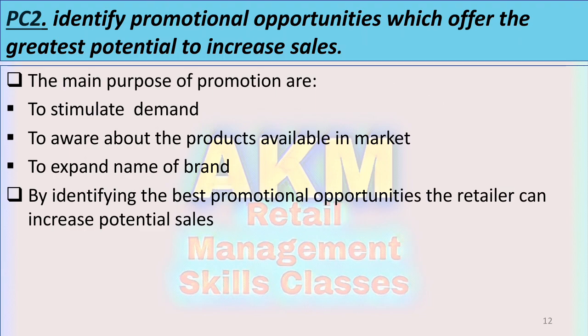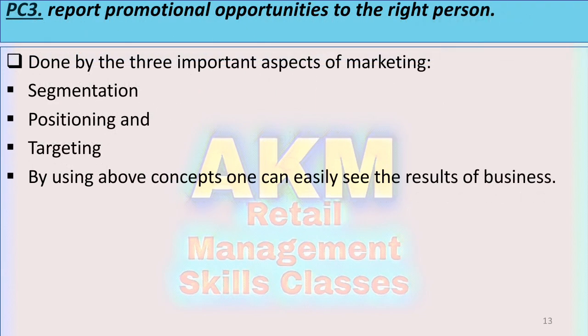PC3: Report promotional opportunities to the right person. It is very important to identify a target group before beginning promotional activities. The target group needs to be made aware of the existence and availability of the product through promotion. Successful promotions help a firm spread costs over a large output. For example, a company like Kellogg's is constantly launching new breakfast cereals, using price, promotions, and place — such as leading supermarket chains — as key elements.